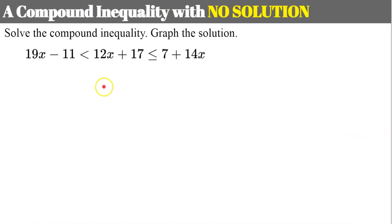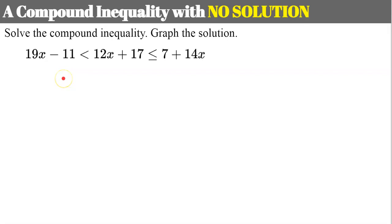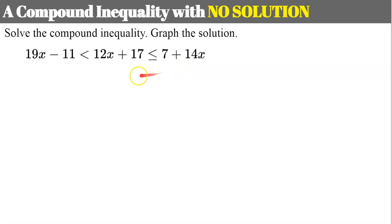First, let's look at what happens when you have a compound inequality with no solution. We're going to solve and graph our solution. We have an AND: 19x minus 11 is less than 12x plus 17, which is less than or equal to 7 plus 14x.